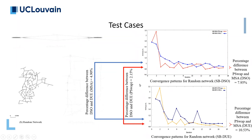Here are the results of the random network. We have about 8% difference between the total travel times — the total travel time in the system optimal scenario with P-swap is 8% lower than with MSA. This amount is about 10% for the user equilibrium scenarios. Also, the system optimal shows about 5% improvement over user equilibrium when using MSA, and about 2% improvement when using the P-swap algorithm.